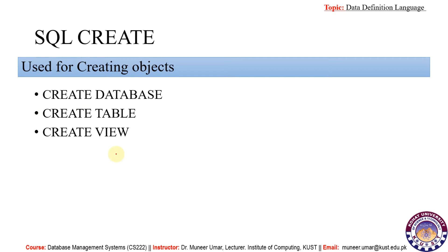With the SQL CREATE command we can create different types of objects. For example, we can create a database, we can create a table, we can create views, and there are other things that can also be created with this CREATE keyword. In this lecture we will practice CREATE DATABASE and CREATE TABLE. CREATE VIEW will be practiced in another lecture.